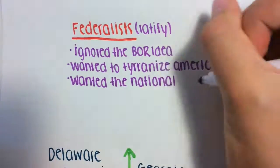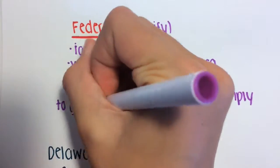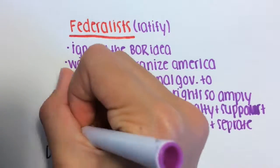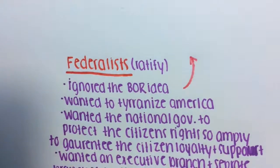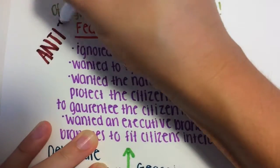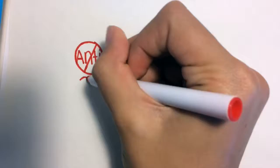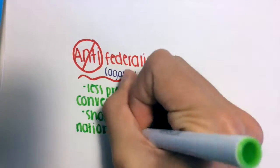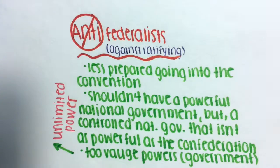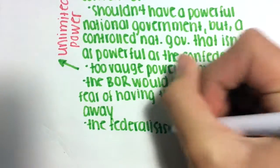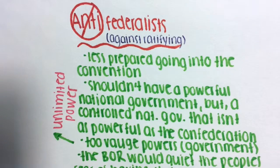Anti-Federalists or don't need it. Federalists. The Federalists ignored the Bill of Rights idea, wanted to tyrannize America, wanted the national government to protect the citizens' rights so amply to guarantee the citizens' loyalty and support. They wanted a strong executive branch and separate branches to fit people's interests. They also believed that if we listed rights by creating the Bill of Rights, the more we lose them. The Anti-Federalists were less prepared coming into the Convention, but had ideas like we shouldn't have a strong national government, but a controlled national government that is not as powerful as the Confederation. They thought that the government's powers are general and vague, almost granting them unlimited power, and the Bill of Rights would quiet the fear of having rights taken away. The Constitution gives the government too much power at the expense of state governments, and lastly, the Federalists wanted to have tyranny and want all the power for themselves.